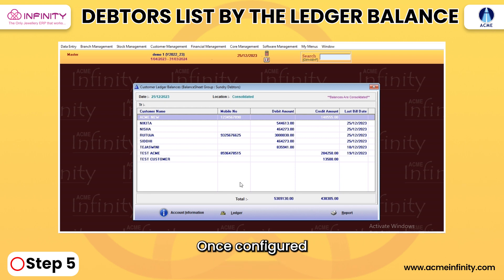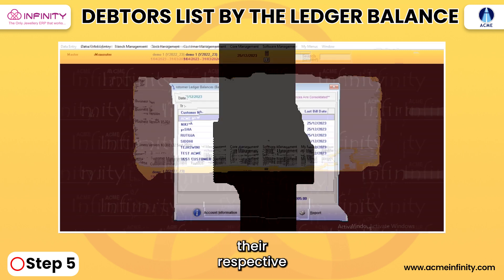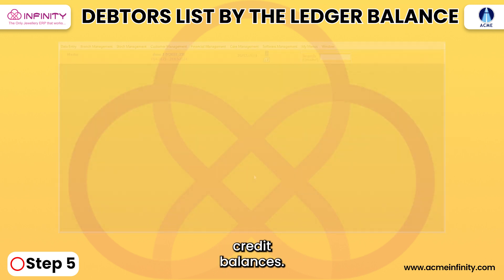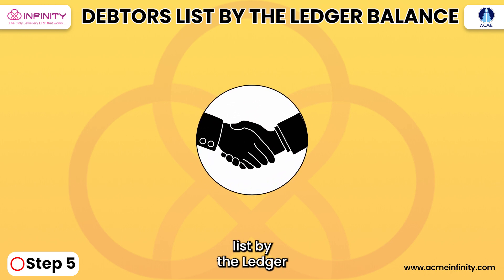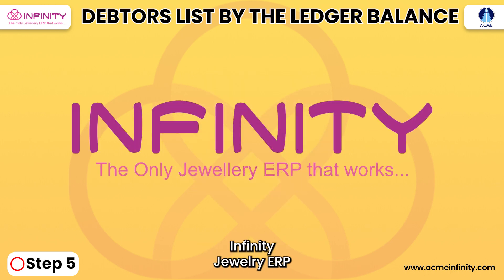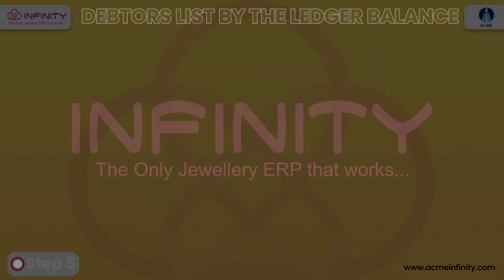Once configured, the report will showcase a comprehensive list of customers along with their respective credit balances. The Debtors List by Ledger Balance feature in the Acme Infinity Jewelry ERP software empowers users to efficiently track customer credit balances, enabling informed financial decisions.